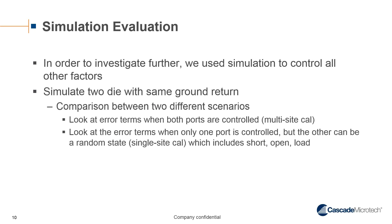In order to investigate further what is going on with multi-site and single-site calibration, we use simulation to control all other factors. This includes environmental conditions, probe-to-pad alignment, and even just cable motion. I simulated two sites with the same ground return. The final comparison between these was done with two different scenarios. One scenario was looking at the error terms when both ports are being controlled, so when site one is shorted, the other site is shorted when you're calibrating. The other scenario was looking at error terms when only one port is controlled, but the other can be at a random state. This is when site one is shorted, the other one could be short, open, load, or through.